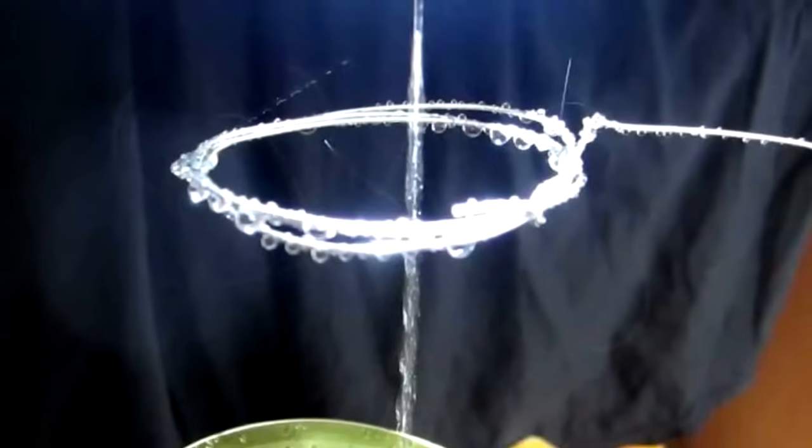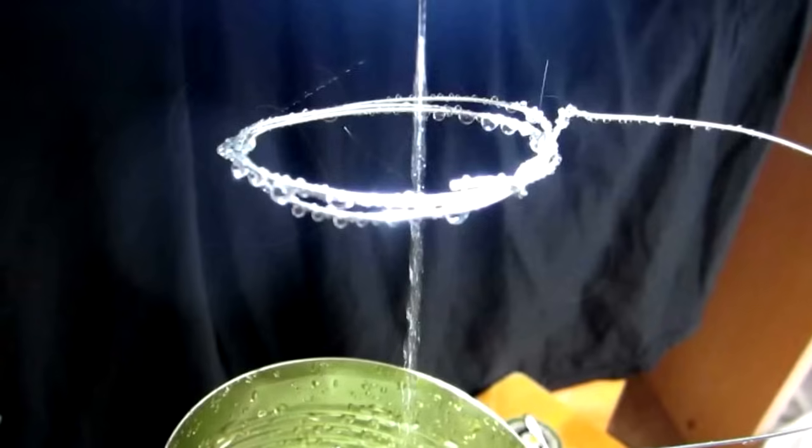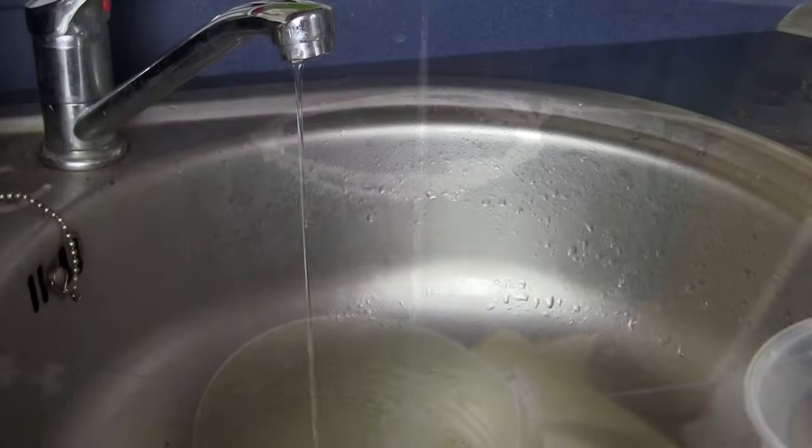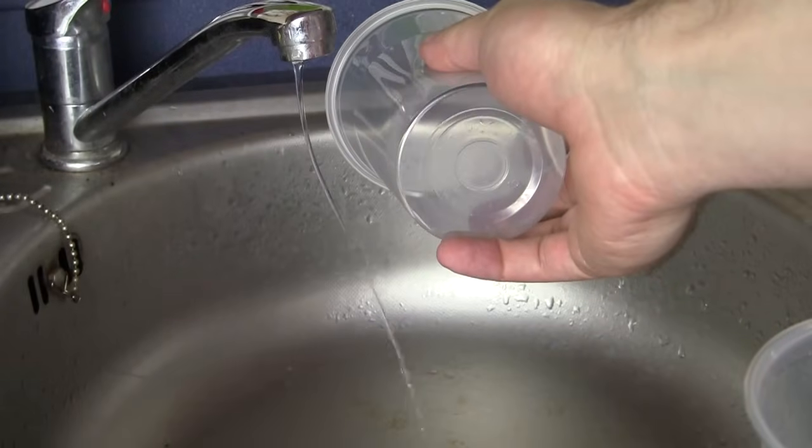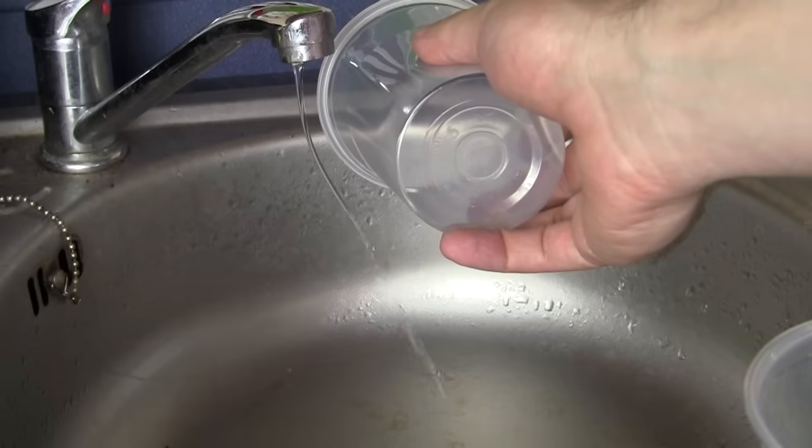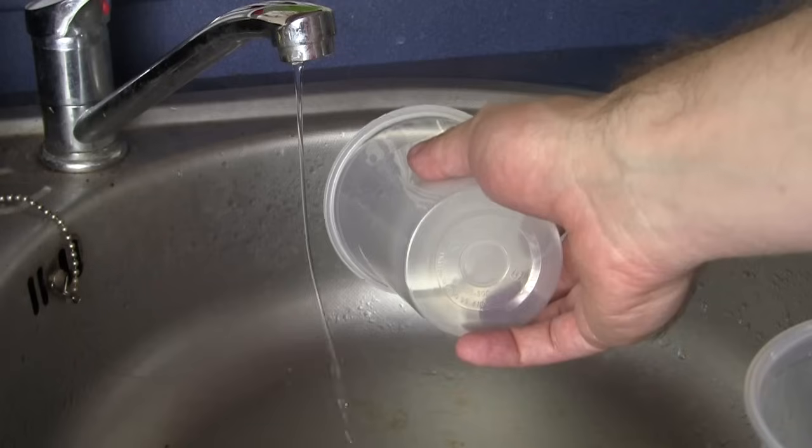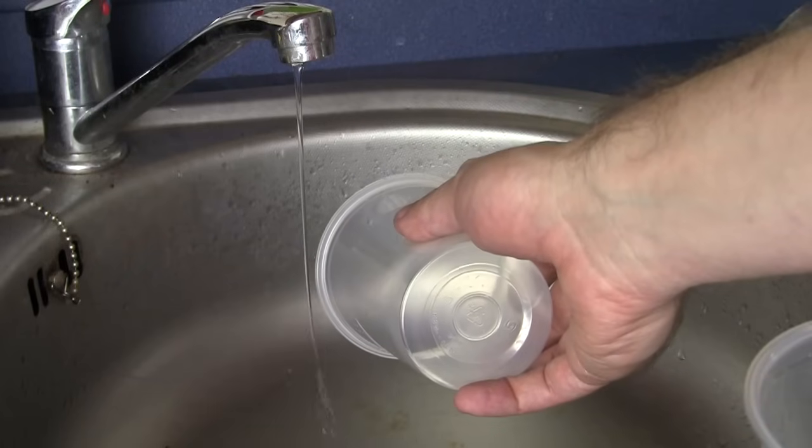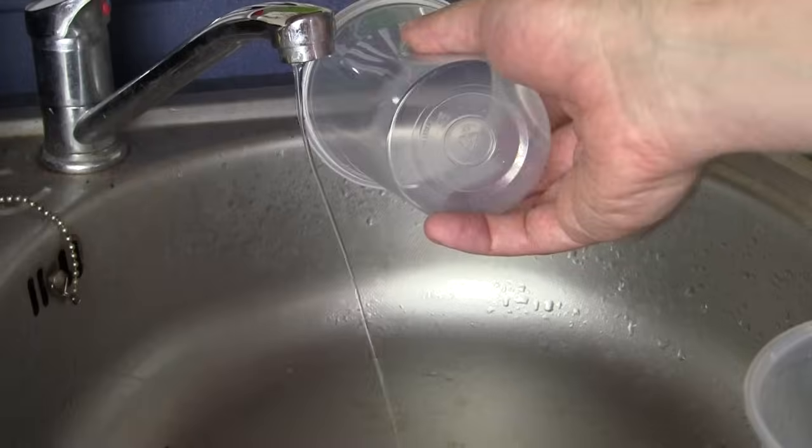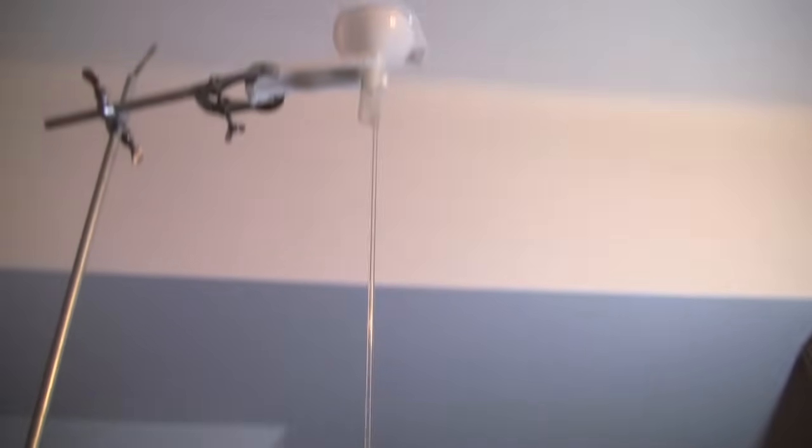However, the key element of the Kelvin dropper, where all of the important stuff happens, is where the water goes from a single stream to droplets. And the mere fact that you can get this strong deflection of a solid stream of water coming out of what is essentially a Faraday cage, and that stream can be strongly deflected even when there aren't any drops, should have caused many a scientist to raise an eyebrow.